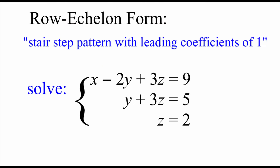When we're solving this kind of linear system, our goal is to get the system into what's called row echelon form, where our equations have a stair-step pattern where those variables gradually go away. The top equation has all of our variables, the next one down loses that first variable, and from there on we keep losing a variable as we go down. We also want leading coefficients of 1 in front of all of those variables.